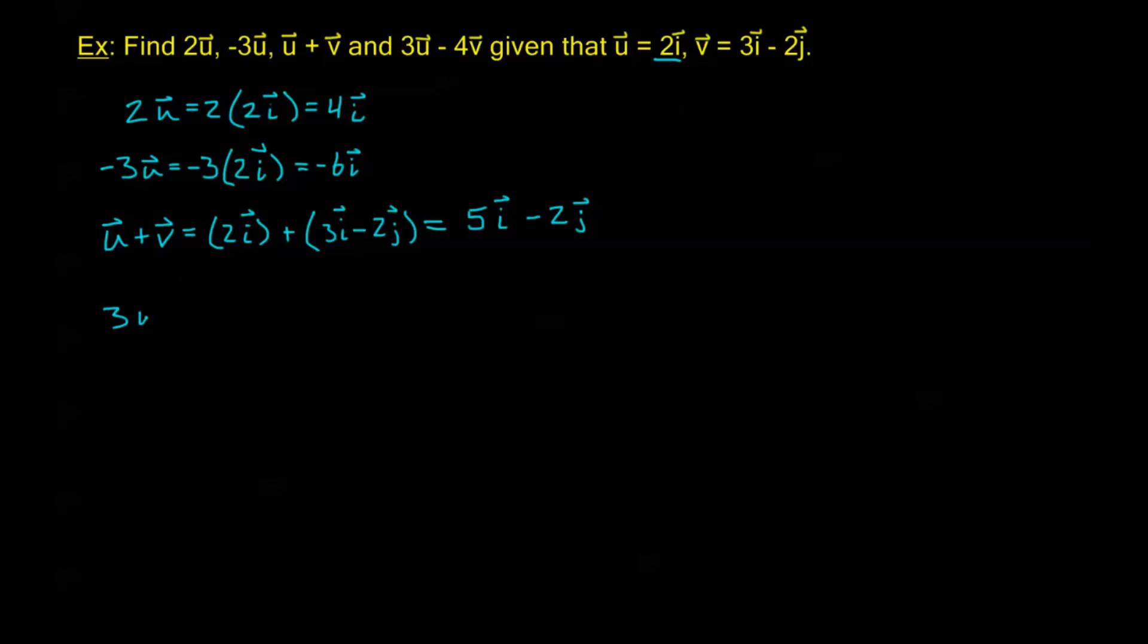Now this last one, 3U minus 4V. I'm going to leave these scalars and plug in for U and V. U is 2I, minus 4V, which is 3I minus 2J.